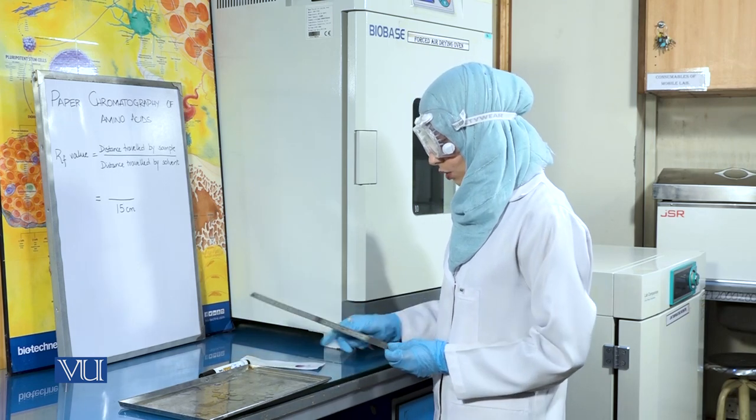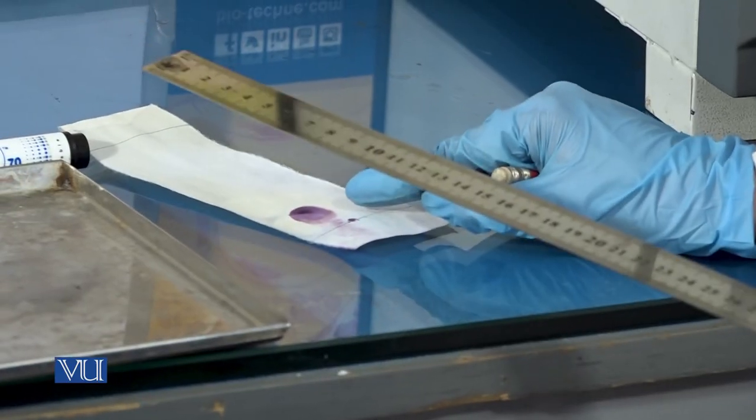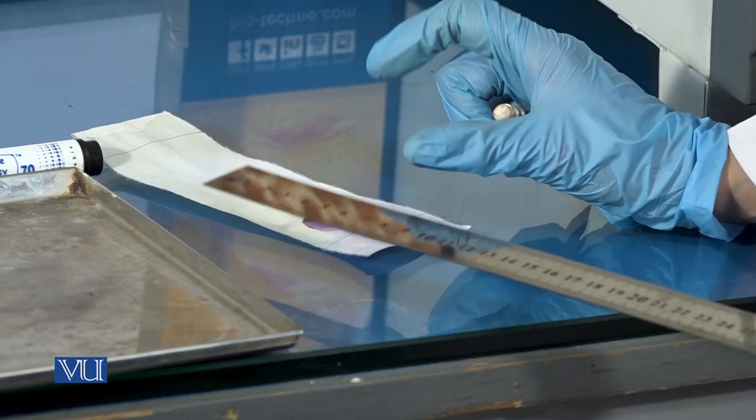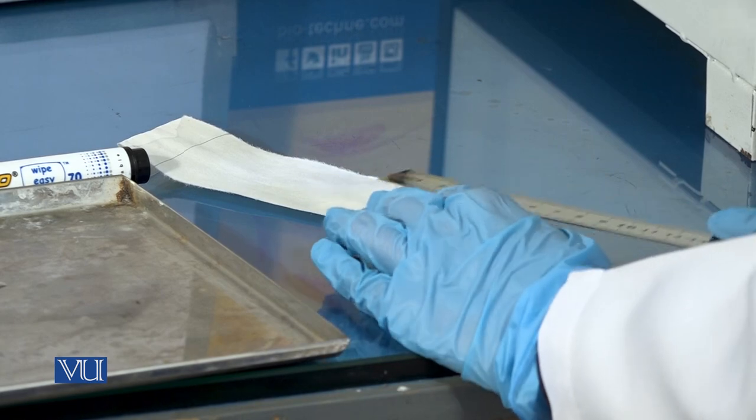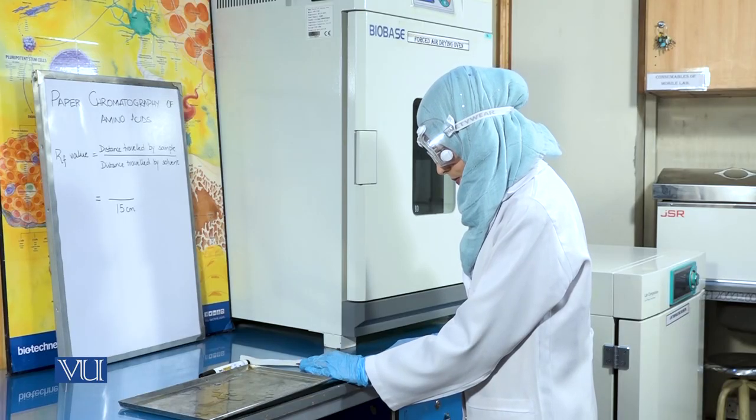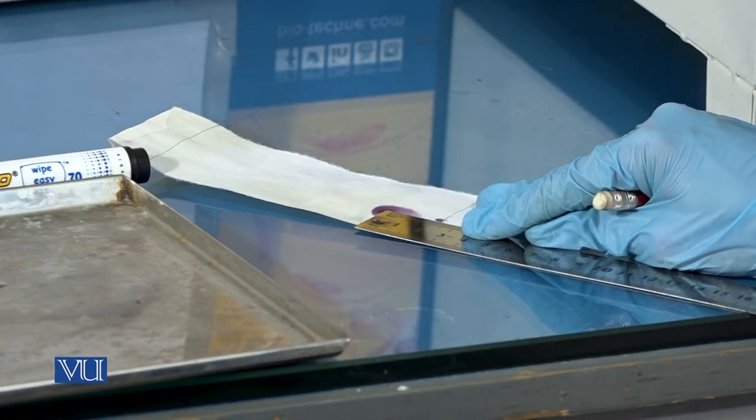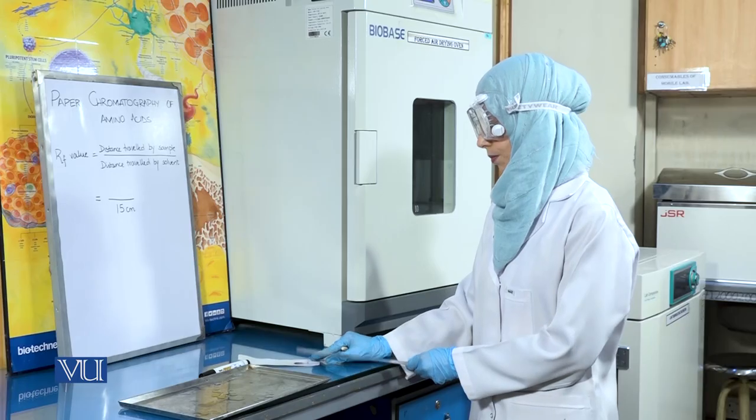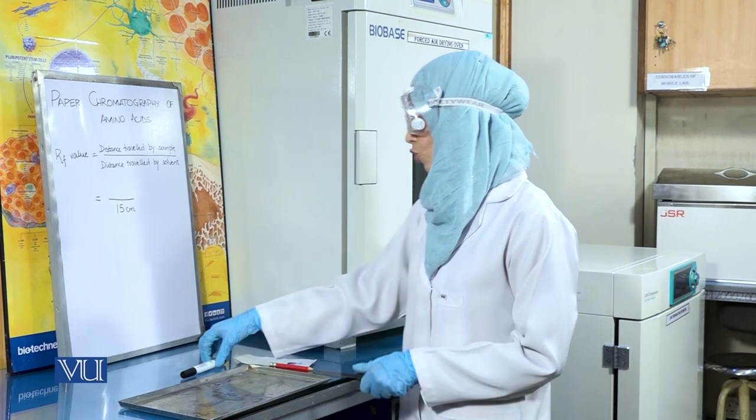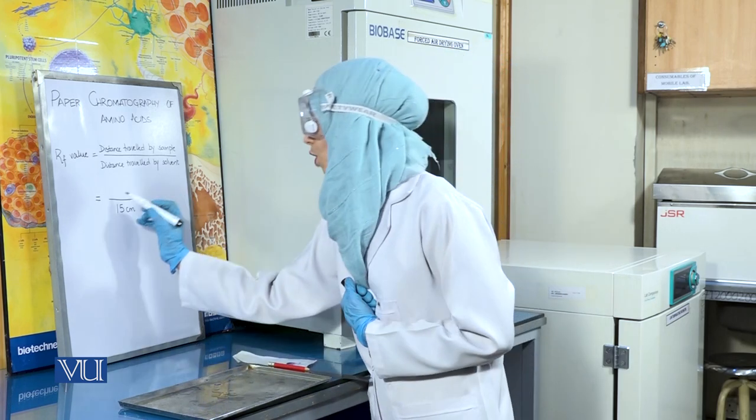We will then calculate the distance travelled by the spot or sample on the filter paper. We will measure the distance from the center of the spot. This comes out to be 2.1 cm for our sample.